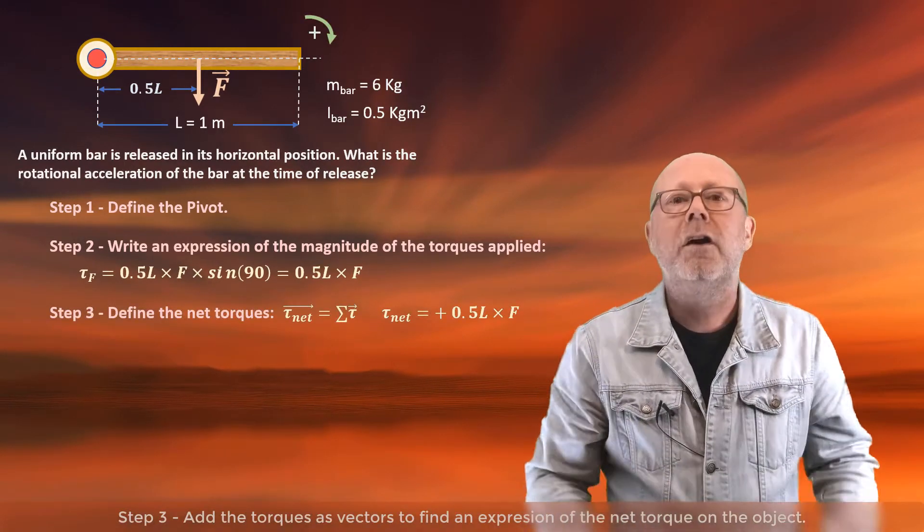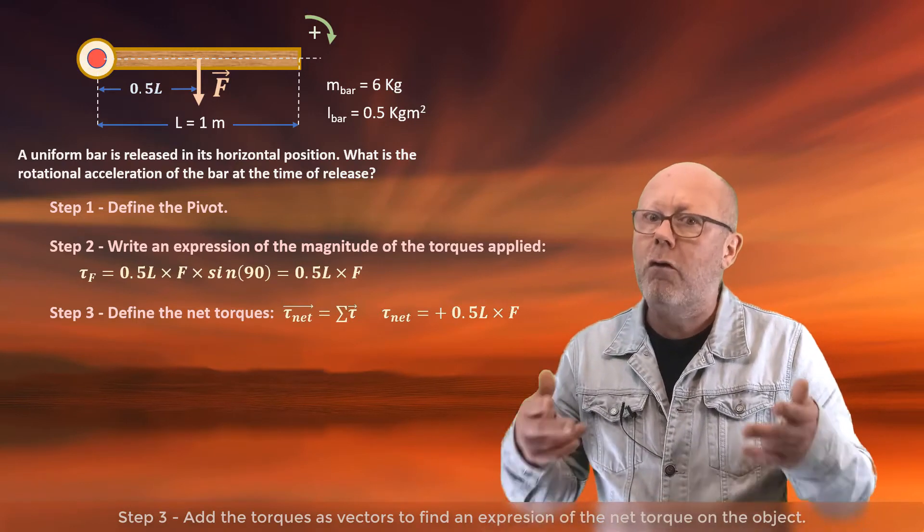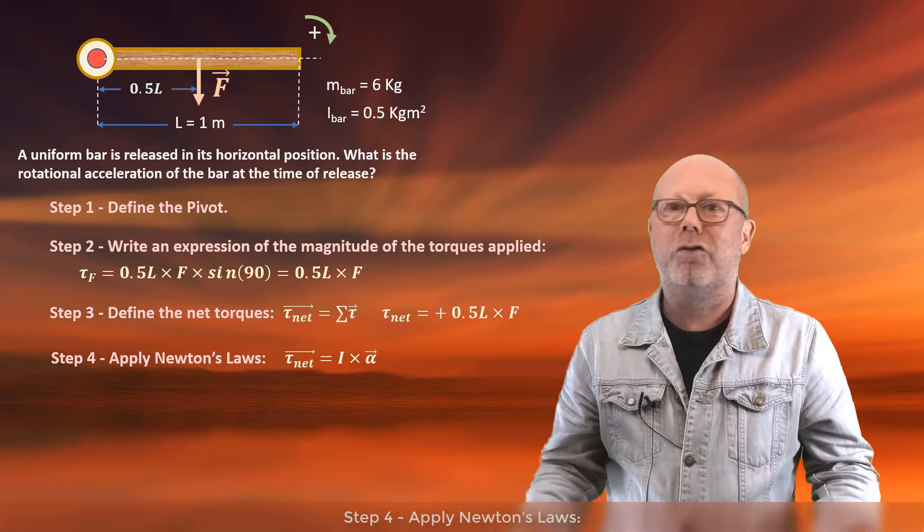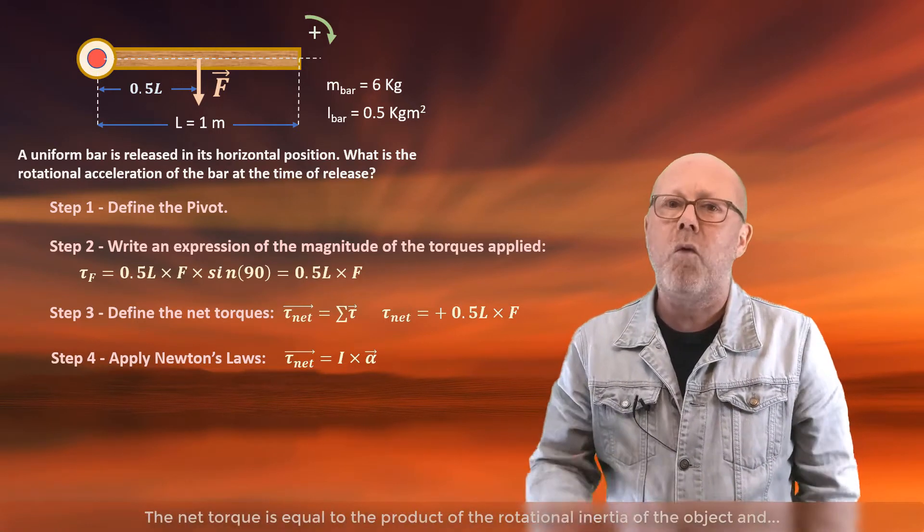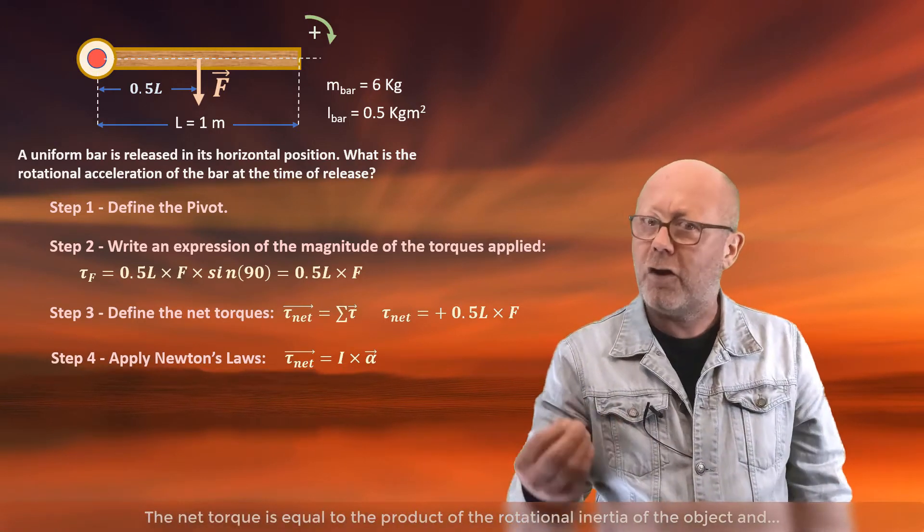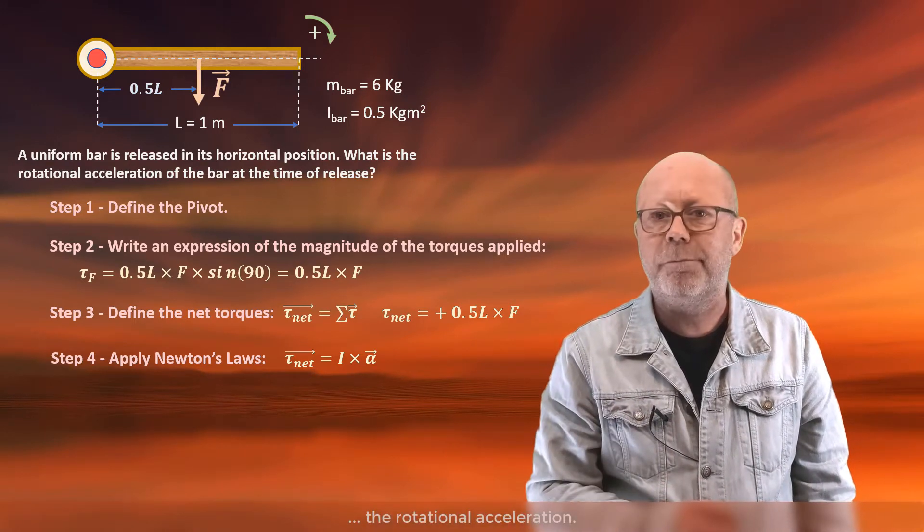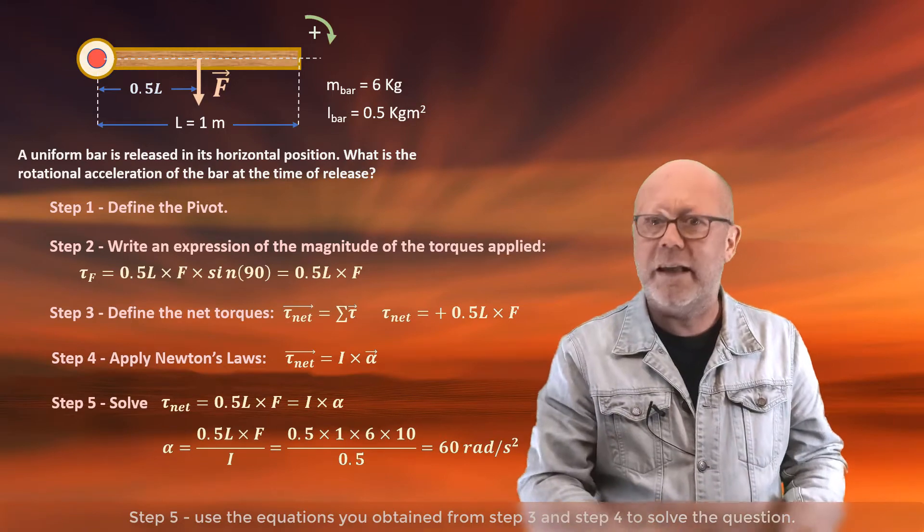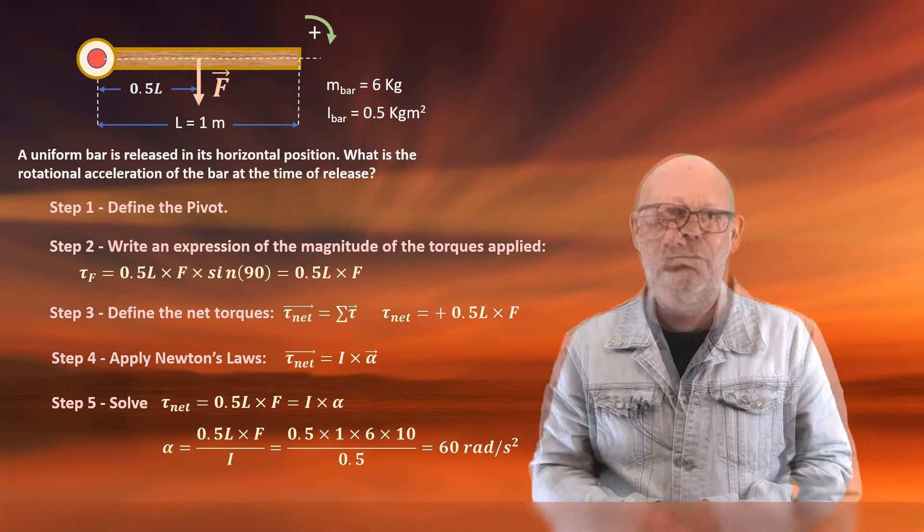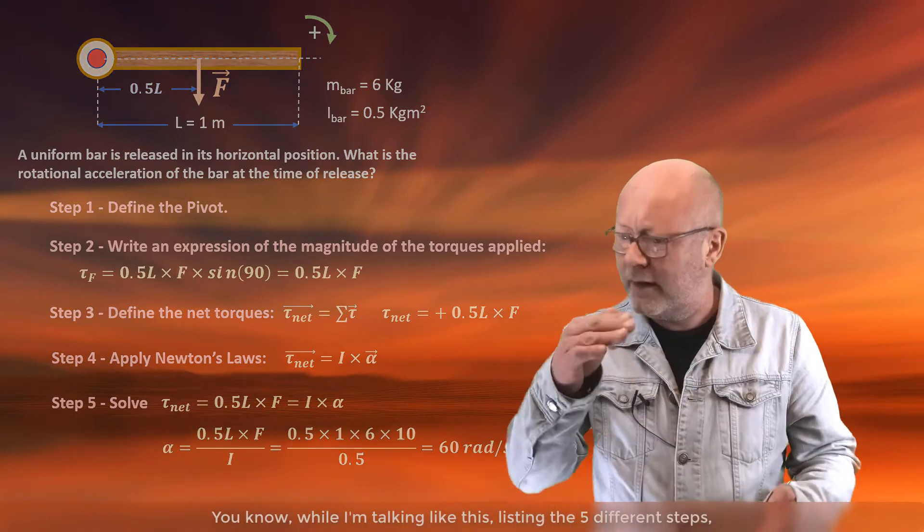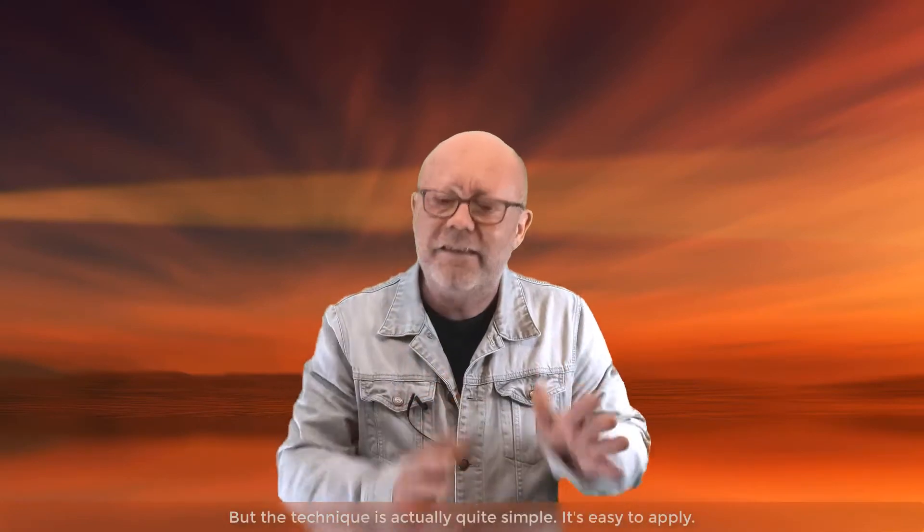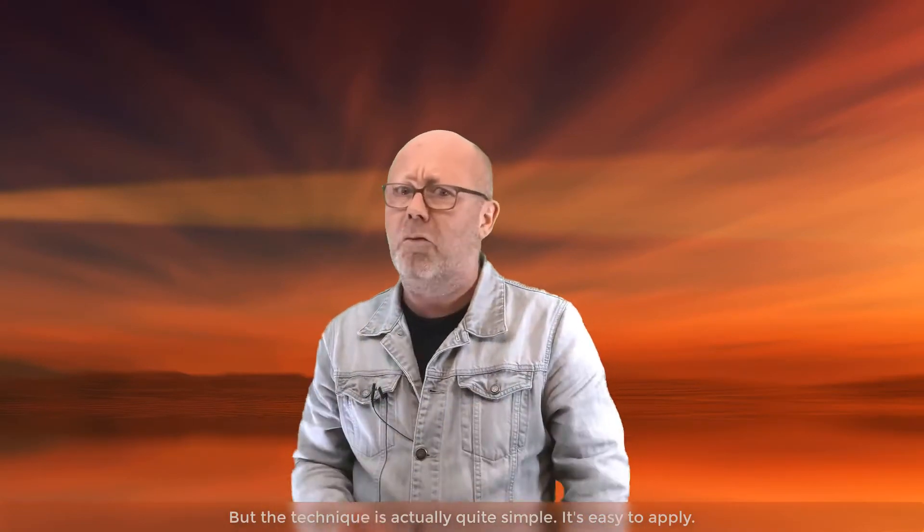Step 3, add the torques like vectors to find an expression of the net torque on the object. Step 4, apply Newton's laws. The net torque equals the product of the rotational inertia of the object and the rotational acceleration. Step 5, use the equations from steps 3 and 4 to solve the question. While I'm talking like this, listing the five different steps, I realize it might look quite intense from your perspective. But the technique is actually quite simple and easy to apply.